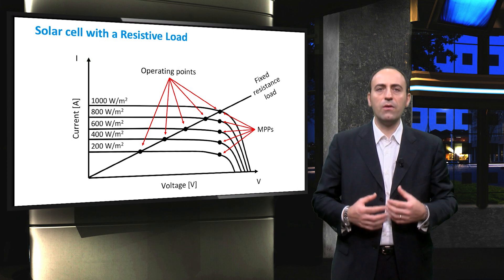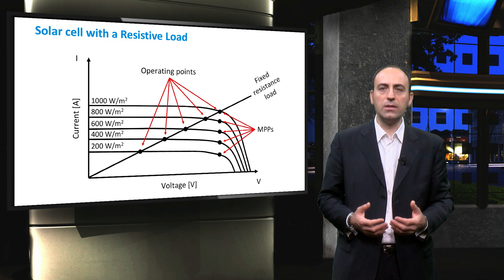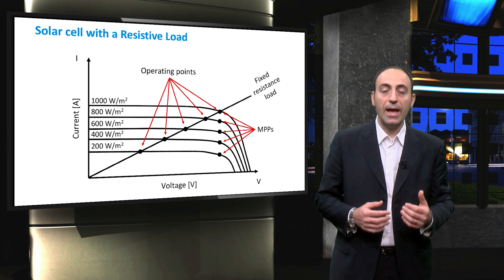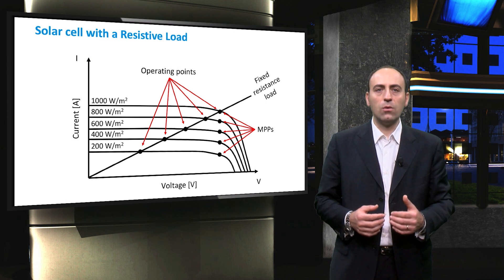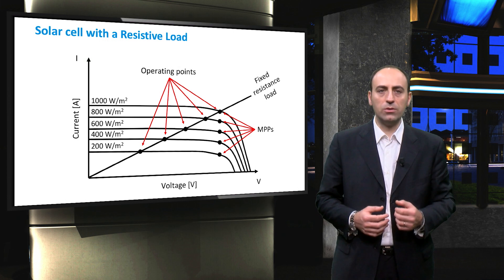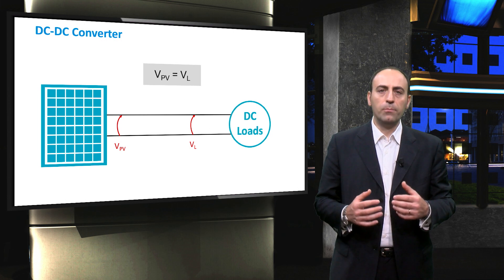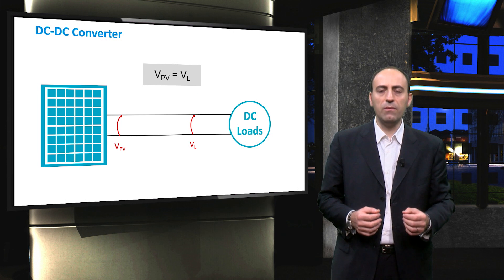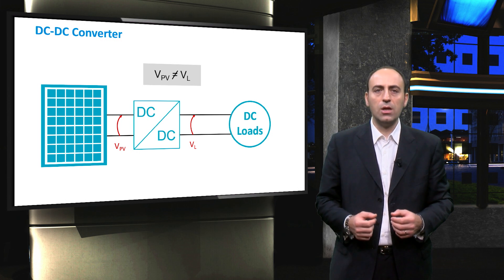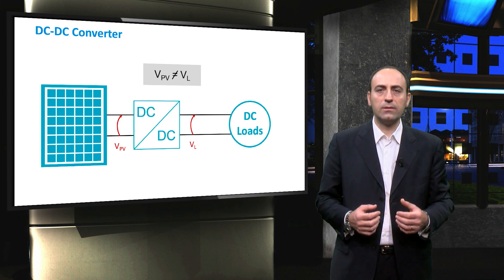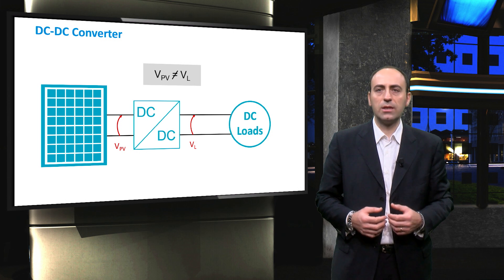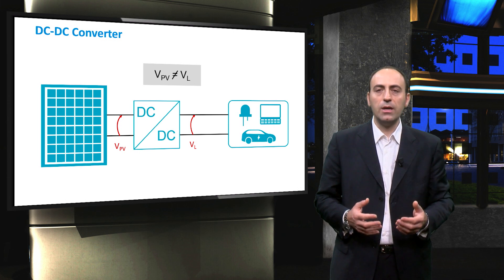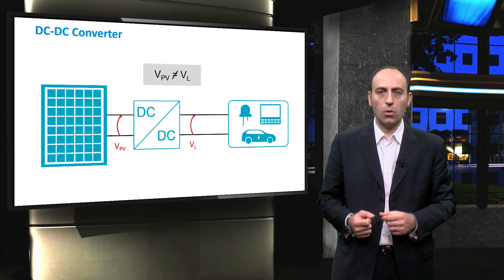Therefore, it is very important that the PV panel is always at the maximum power point of the module and, at the same time, that also delivers a maximum power to the load. The purpose of the DC-DC converter is to decouple the PV voltage from the load voltage so that the PV panel can work at its optimum while the load, such as an LED, a laptop or a car, is supplied with its rated voltage.